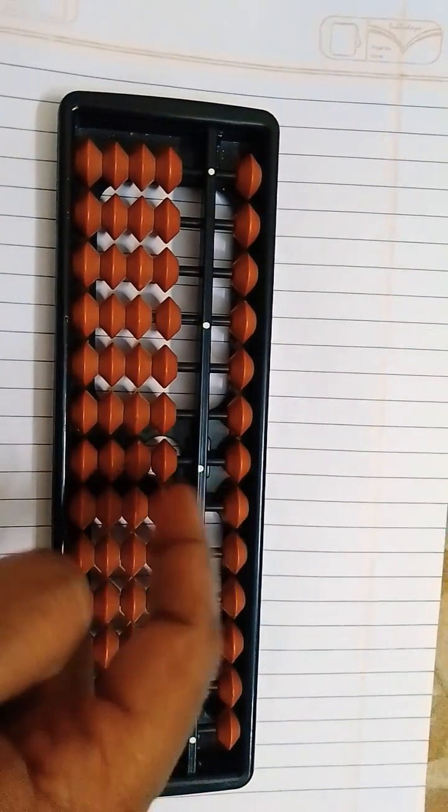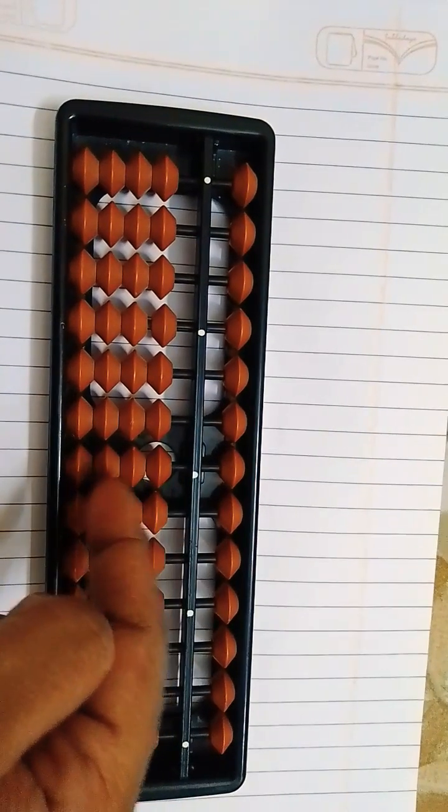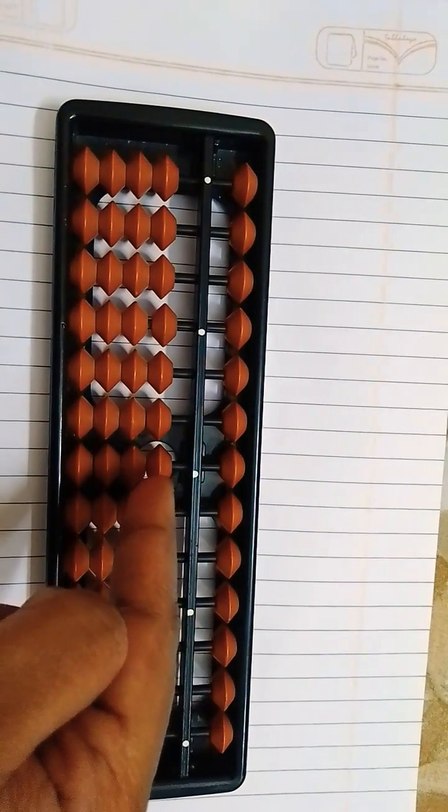Now the upper bead value. This one is the upper bead, these are the lower beads. The upper bead value is 5, and each lower bead value is 1.